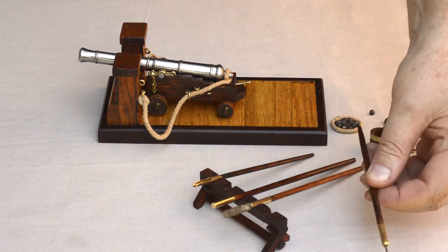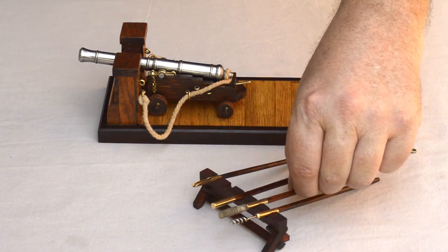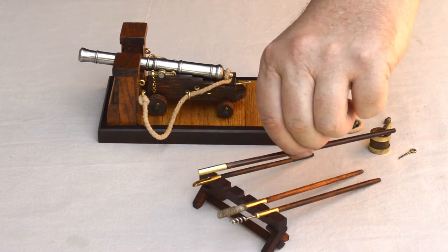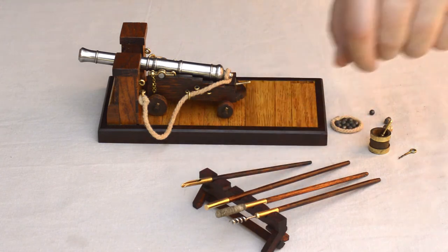We have here the basic tools needed for loading a gun: the worm, the sponge, the ramrod, and a ladle used in the period before felt powder cartridges.